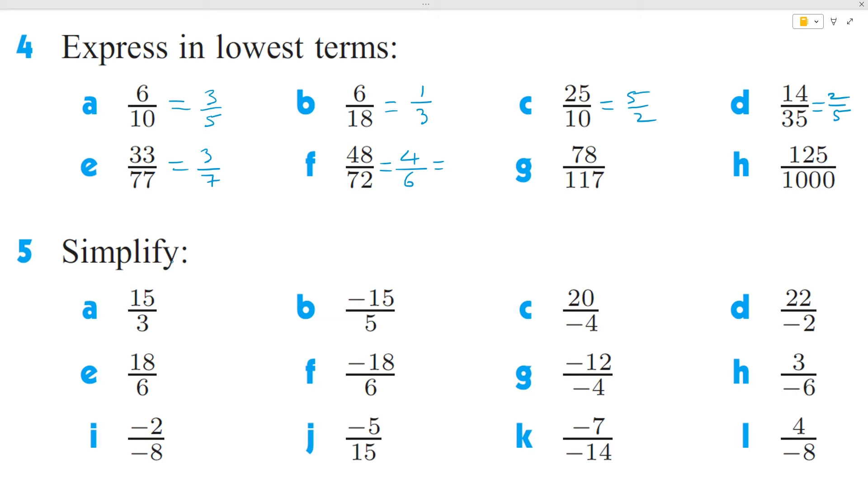So we could have gone even one step further and divided the top and the bottom by 24 directly. So 4 over 6 being even over even can be divided by 2 again, and it's 2 over 3. So the quickest way to do F would be to divide top and bottom by 24.